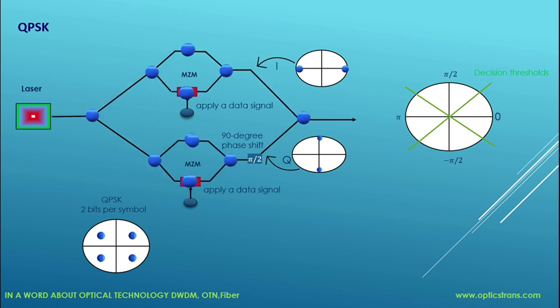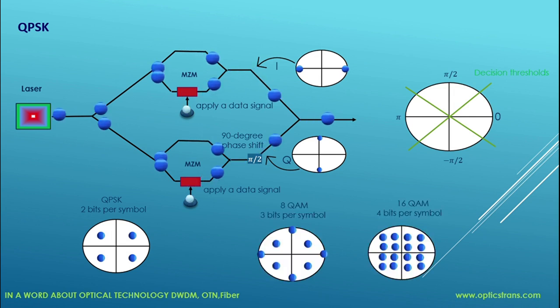By using more complex driving signals, the same nested Mach-Zehnder component structure is used to generate all types of amplitude and phase modulation techniques like 8-QAM with 3 bits per symbol and 16-QAM with 4 bits per symbol.